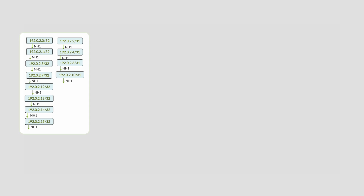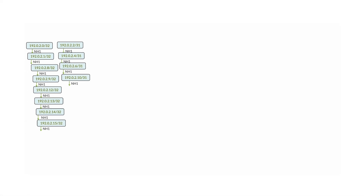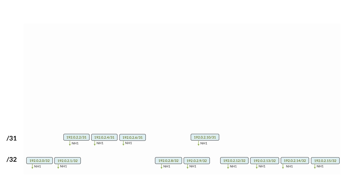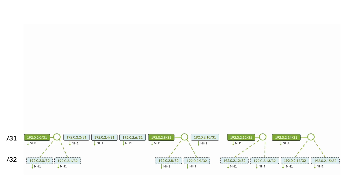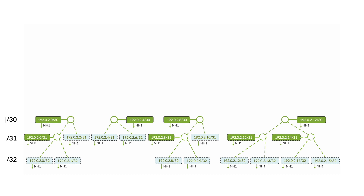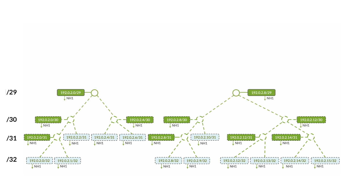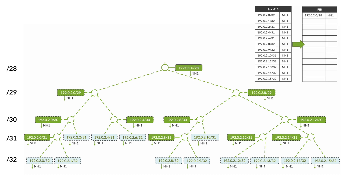Let's take a slightly larger example. Here I received 12 prefixes — /32s and /31s — all pointing to next-hop NH1. With this graphical representation, it's an iterative process. At each level, the system creates aggregates when possible. At higher levels, they can themselves be associated with received prefixes or other aggregates, and so on up to a /28 summary.